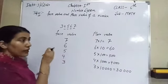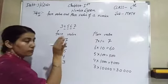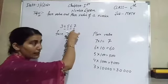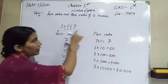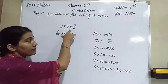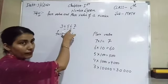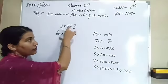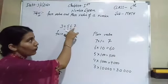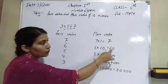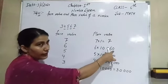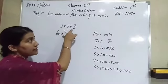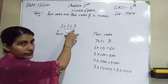Here is a shortcut way to remember. The face value of 7 is at the last place, so its place value remains the same: 7. For 6, it is at the second position, and there is only one digit after it, so write one zero after 6 — that gives 60. For 5, there are two digits after it, so write two zeros — that gives 500.